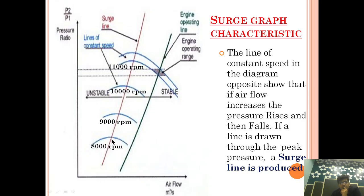So if we put a dot at each of the peak points — of the 8,000 RPM, 9,000 RPM, 10,000 RPM line, and so on — and connect those dots, we get a line. This line is called the surge line. As I have written: if a line is drawn through the peak pressure of each constant speed line, that line is called the surge line.